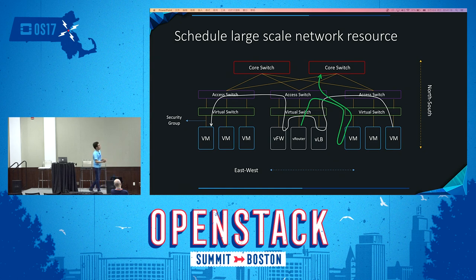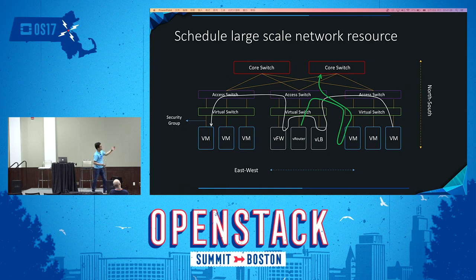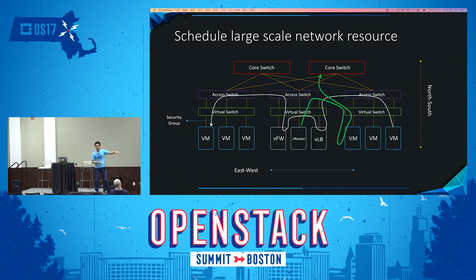If there is traffic coming from outside the data center, it should go to the security device — such as a firewall — or to NFV components instead. So we have two different traffic types: east-west traffic handled by security groups on the host, and north-south traffic handled by physical security devices or NFV components.